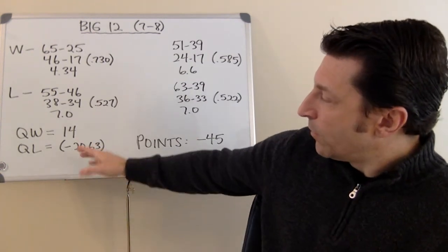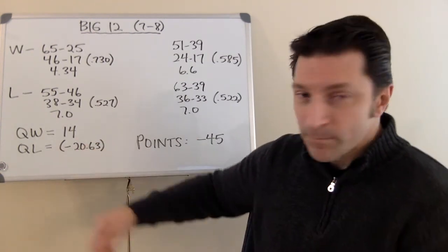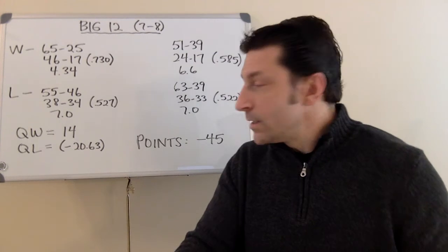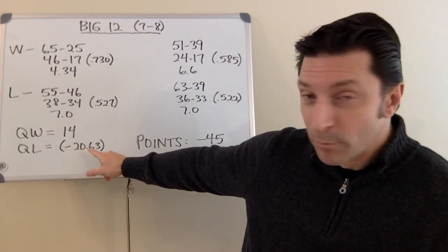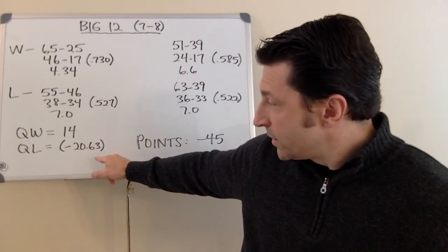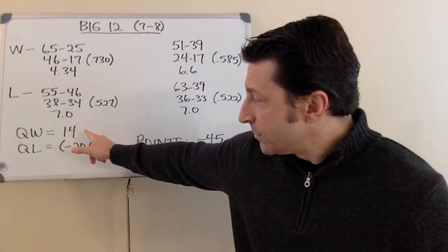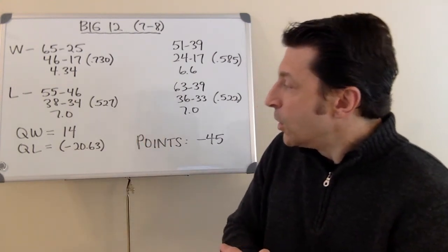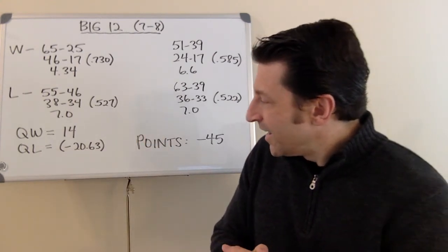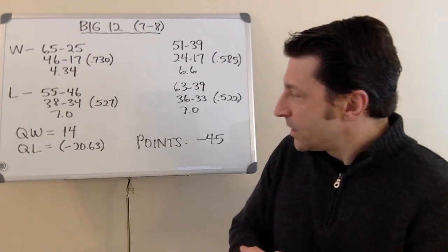So, the average win for the Big 12 was 14. The average loss, we went through the same formula. So, that number, the lower it is, the better it is. 20.63. This number needs to be as high as possible. So, the quality win average was 14. The quality loss averaged at a negative 20.63.